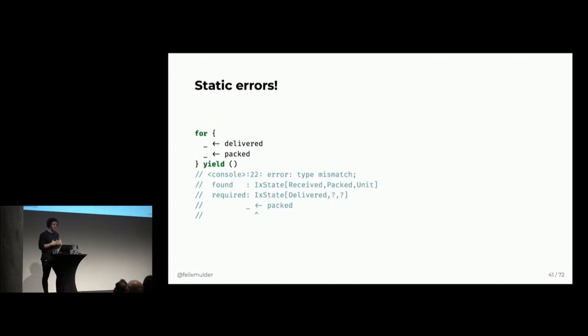So, the compiler here can also help you if you screw up. So, this program is invalid, right? We're delivering something and then we're packaging it. That's not really possible. So, the compiler will here tell you that, hey, you know, I found an index state from received to packed, but I actually need something that goes from delivered into something else. So, the compiler can help you out at compile time, which is really great.